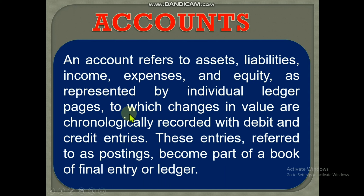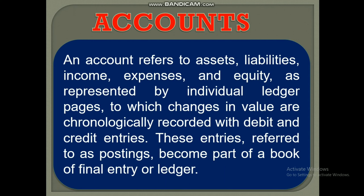An account refers to asset, liabilities, income, expense, and equity as represented by individual ledger pages to which changes in value are chronologically recorded with debit and credit entries. This entry is referred to as posting and becomes part of a book of finality or ledger. That means accounts tell us about the five main things in an organization — asset, liabilities, income, expense, and equity.